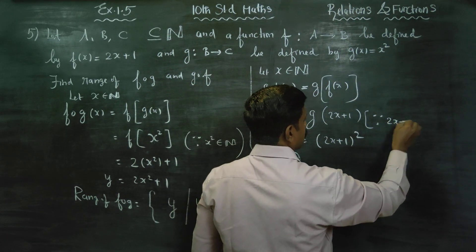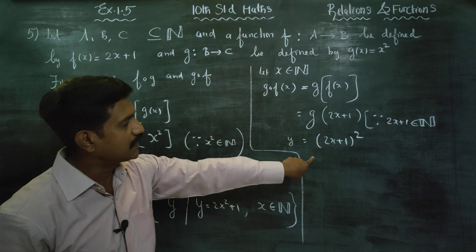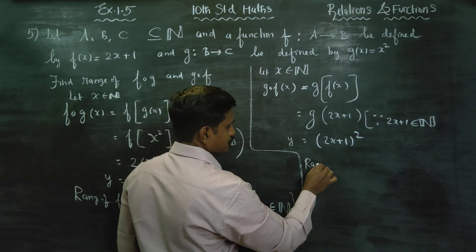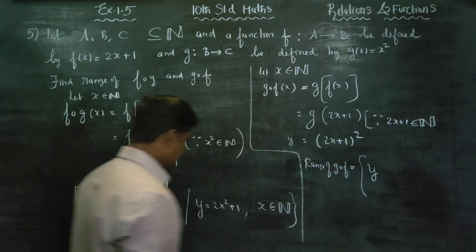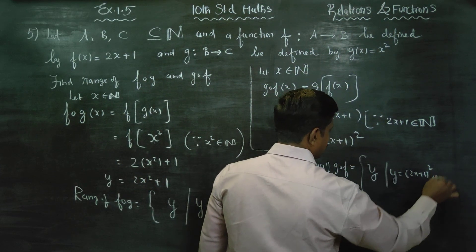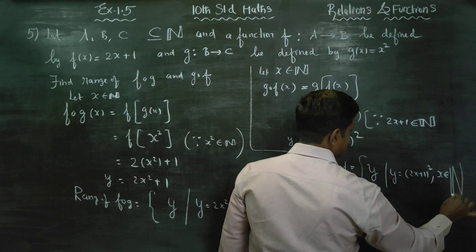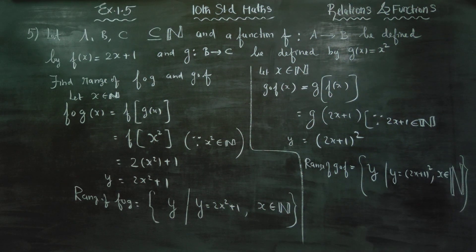Because 2x plus 1 is a natural number. That is why the result is also a natural number. The natural number goes into G. So G dot F of x equals the square of 2x plus 1. The range of G dot F is equal to the set of y such that y equals 2x plus 1 squared, where x belongs to natural numbers. This is the range of G dot F.